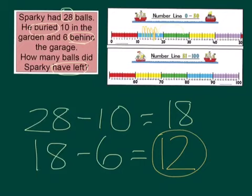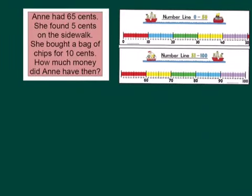So we've used two number sentences to find our final answer. Let's have a look at one more. Now this one's a little bit challenging. You see if you can figure out what we need to do differently with this one. Anne had 65 cents. She found 5 cents on the sidewalk. She bought a bag of chips for 10 cents.